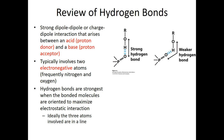Before we start discussing water, let's take a quick review of hydrogen bonding. Any time we're going to form a hydrogen bond — shown here with blue dashes — we will need a hydrogen bound to a more electronegative atom. Very often we're going to see this hydrogen attached to an oxygen or a nitrogen.